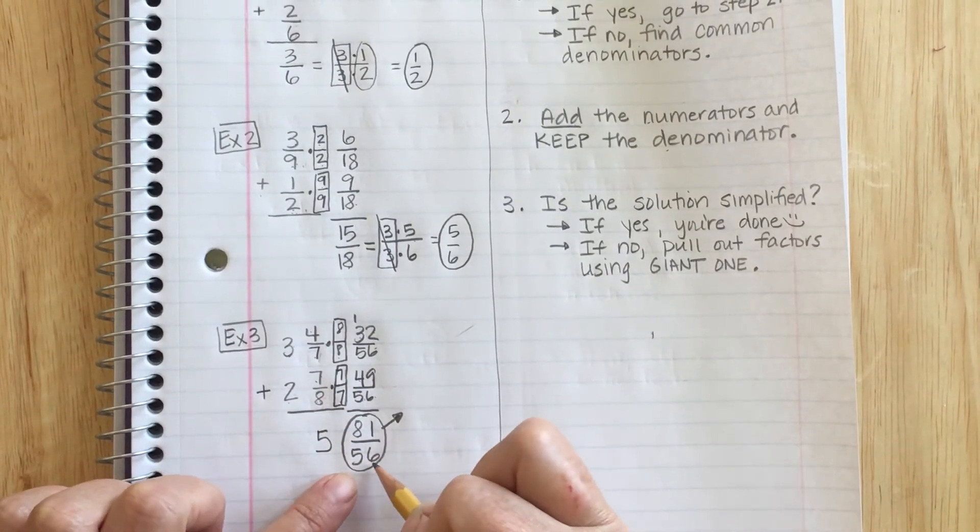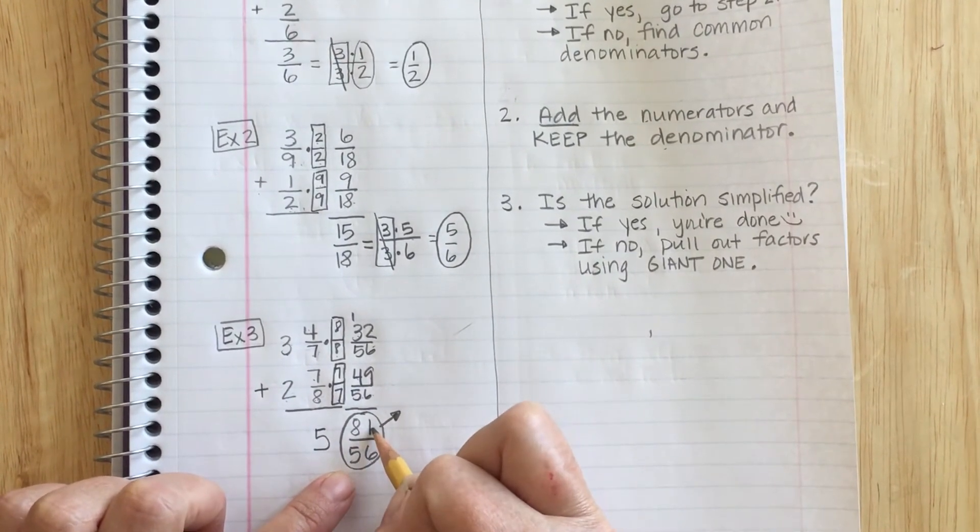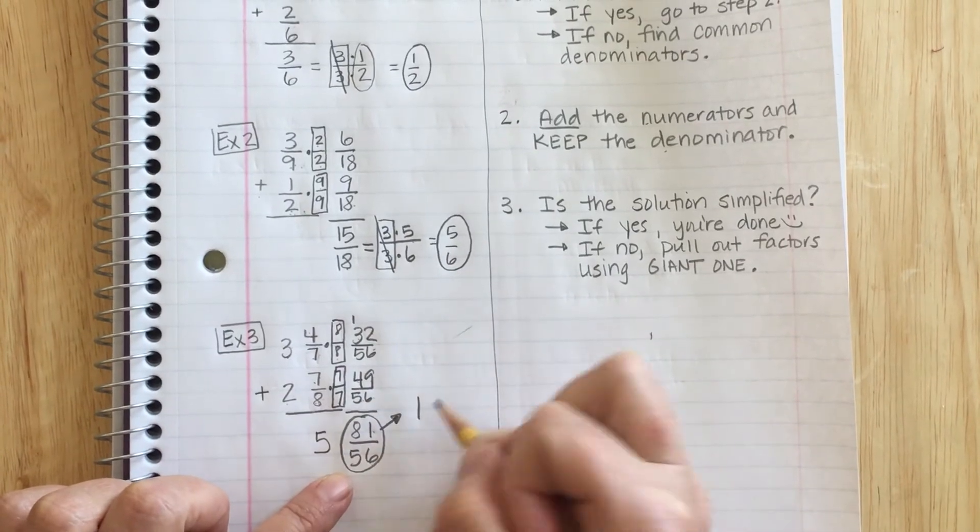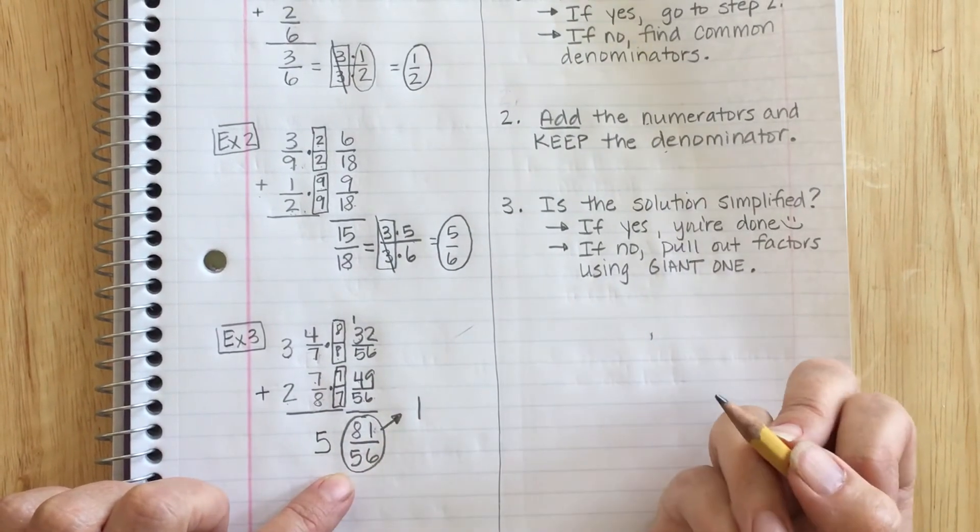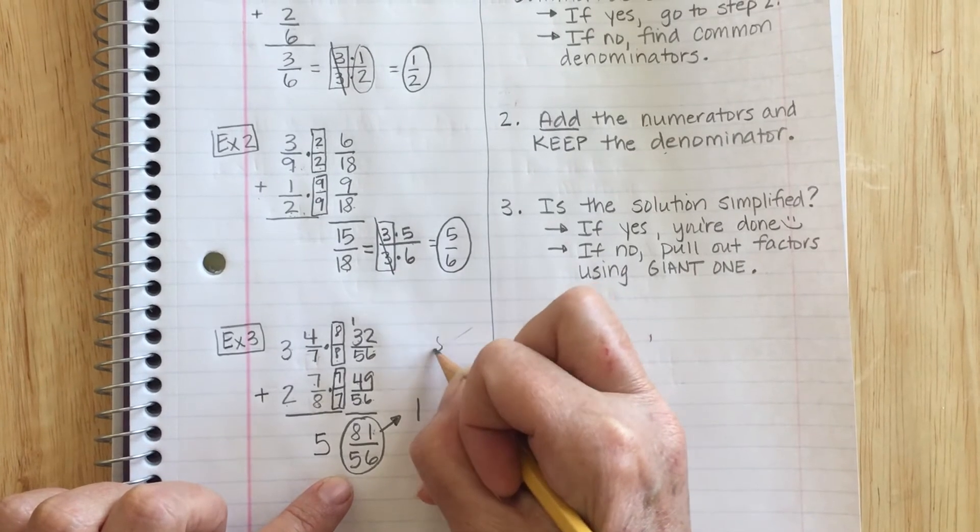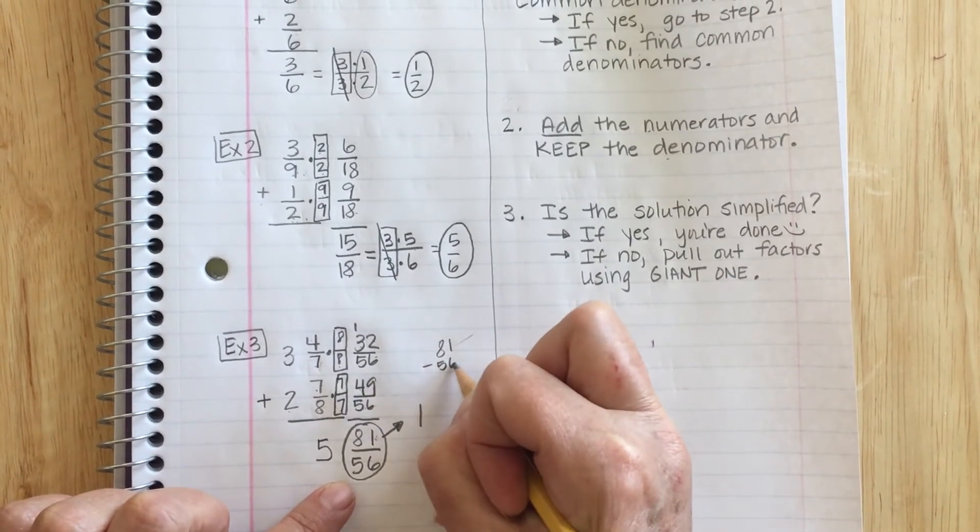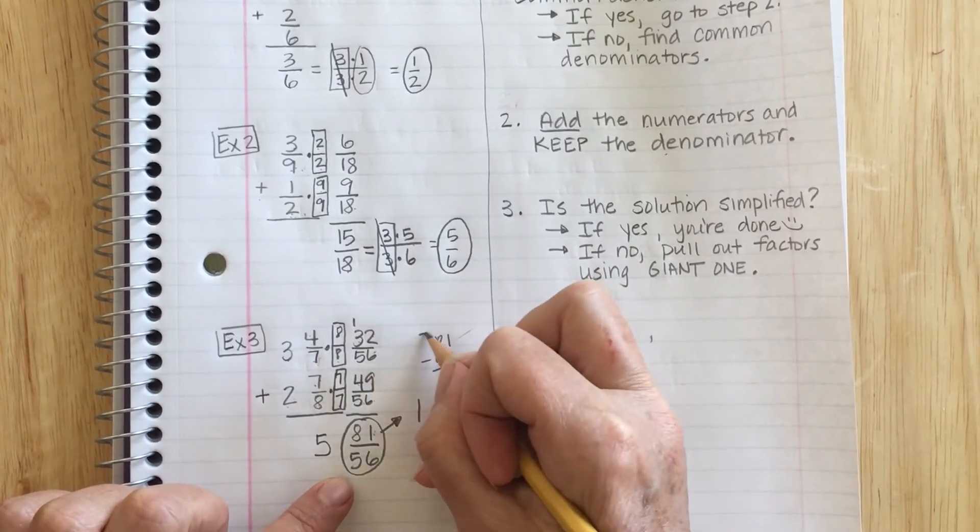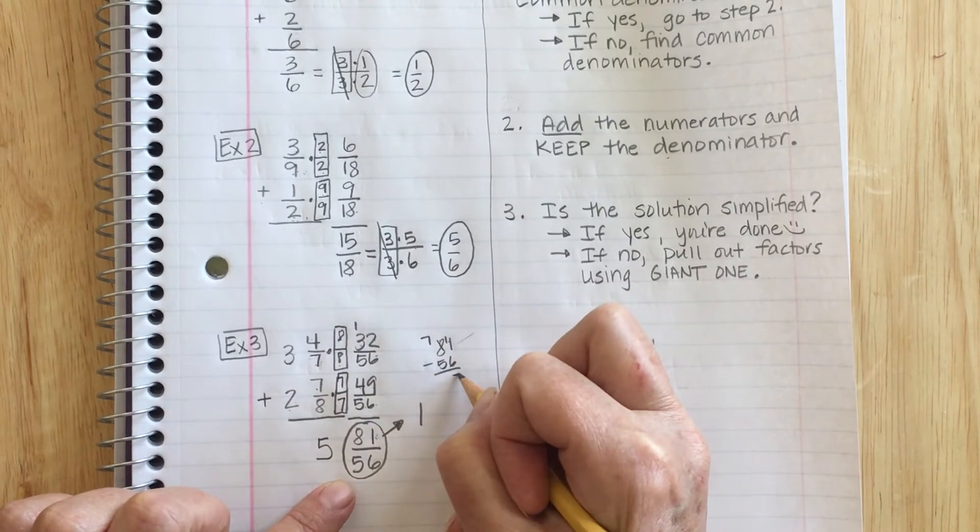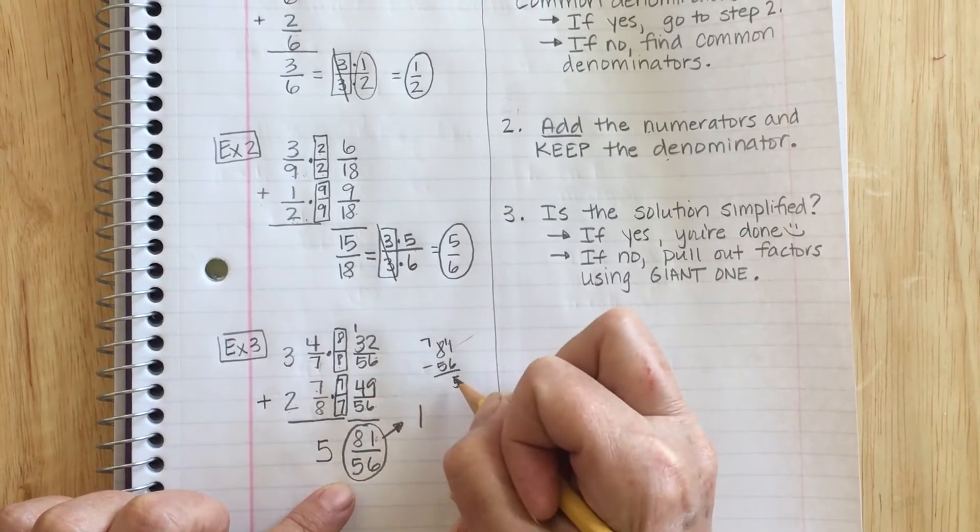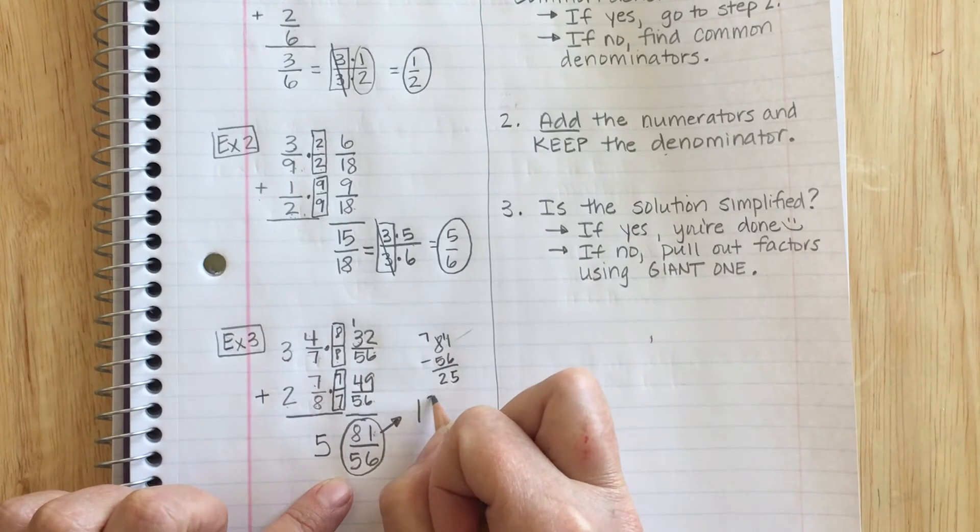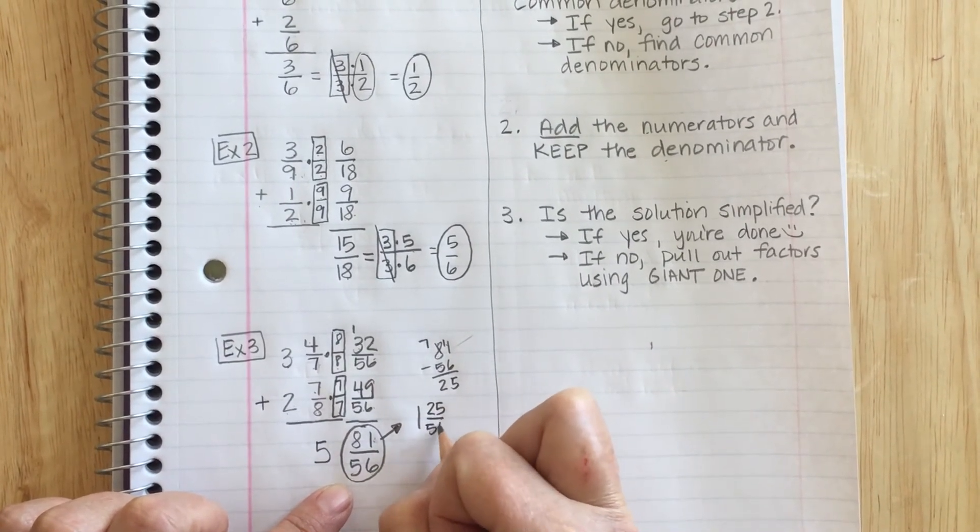Remember, we look at how many times does 56 go into 81. Well, I know it only goes in one time because otherwise this number would have to be over 100. But I'm going to have to do some subtraction. I don't remember 81 minus 56. 11 minus 6 is 5. 7 minus 5 is 2. So I'm left with 25 over 56.